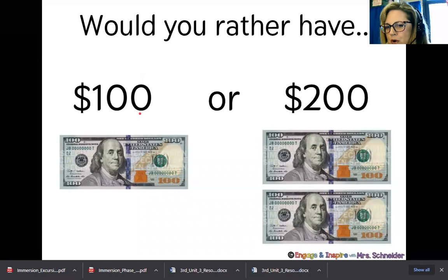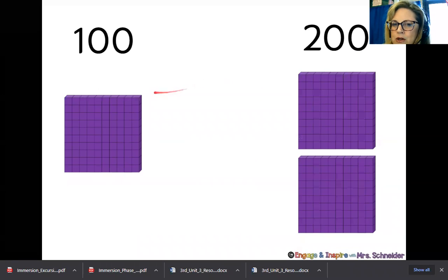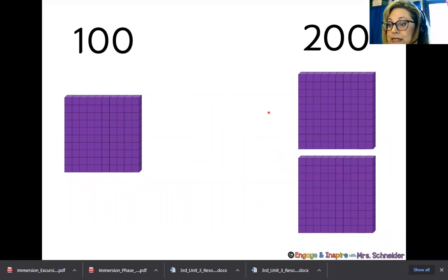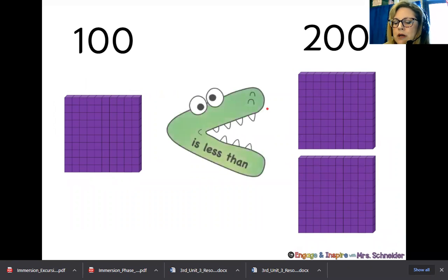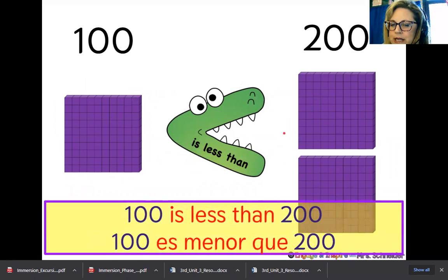Think to yourself, would you rather have $100 or $200? So it's just like converting this over. Here's $100 or $200. Which one's bigger? The crocodile or the alligator mouth is going to bite towards the bigger number. And of course, he wants the $200, right? So $100 is less than $200.